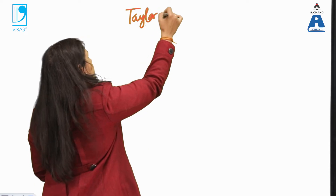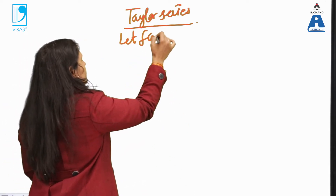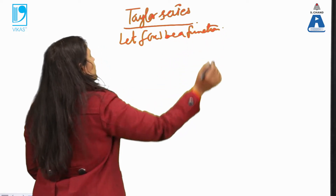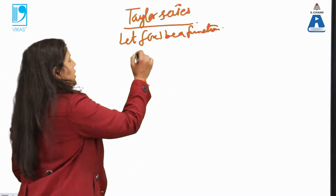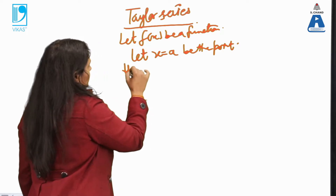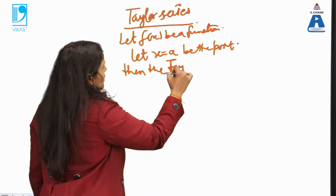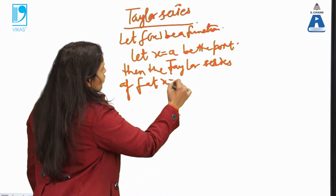I'll start with what exactly a Taylor series is and how we write Taylor series for any function, and then I'll take up the series of fundamental functions — sin x, cos x, tan x, e to the power x, log x. We start with a function: let f(x) be a function. For Taylor series, let x equal to a be the point. Then the Taylor series — Taylor is the name of the mathematician, so T should be capital — the Taylor series of f at x equal to a is: